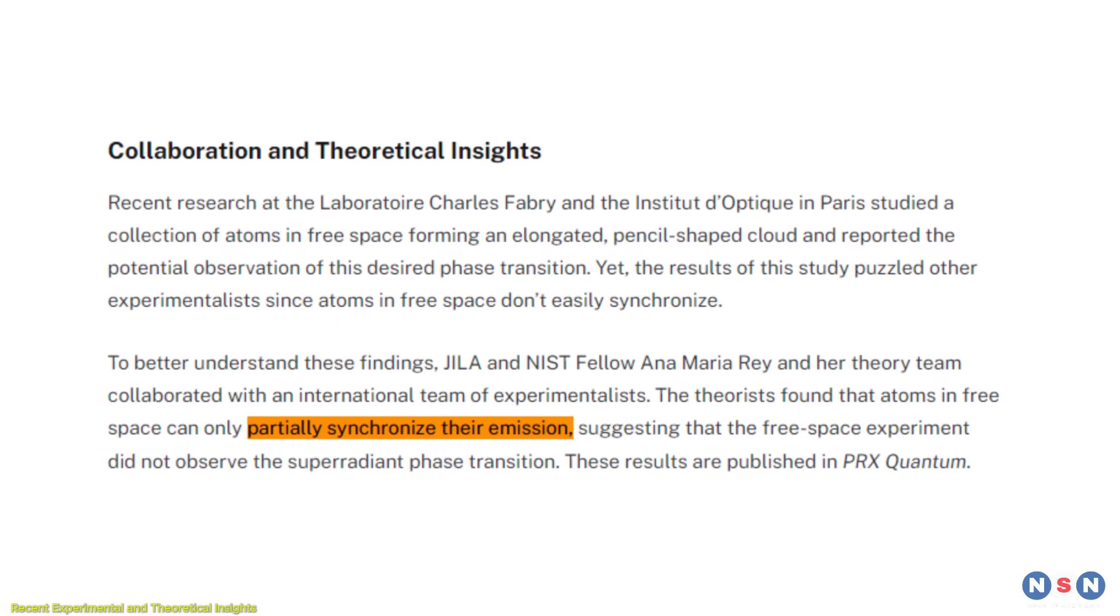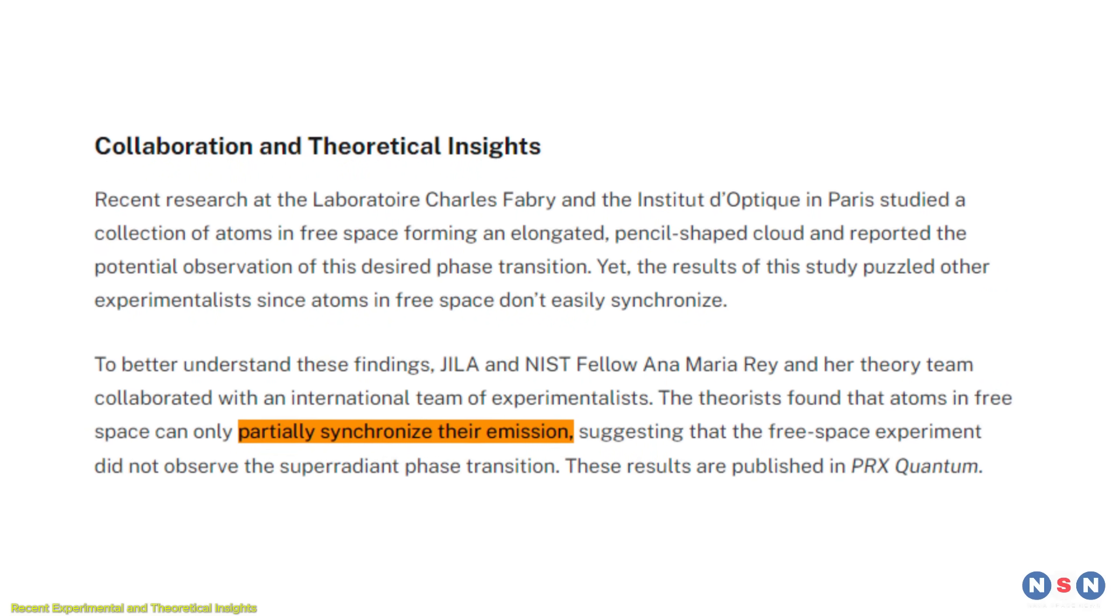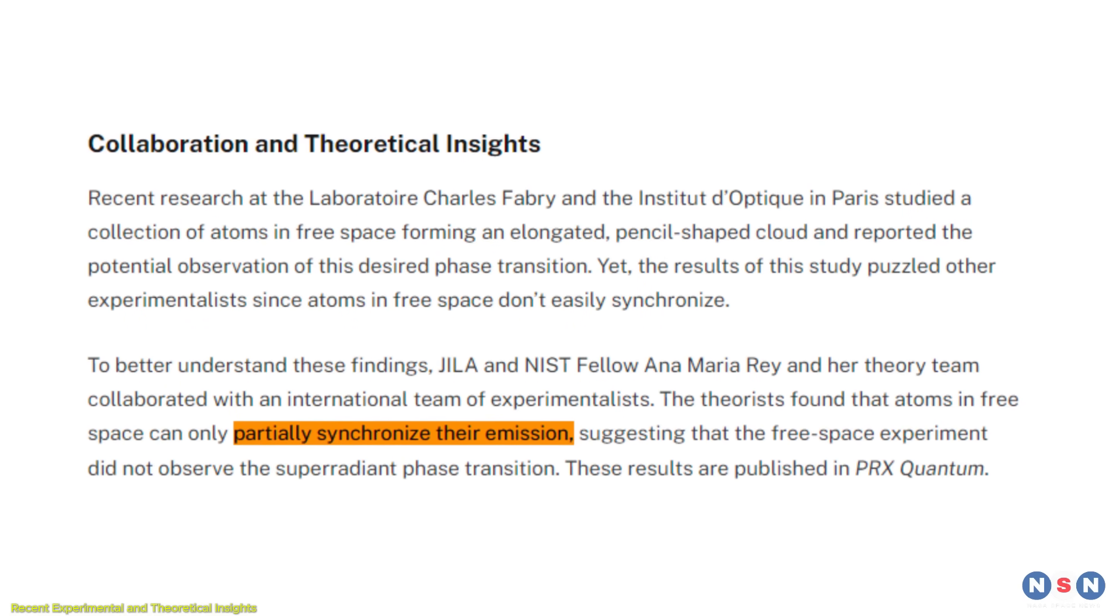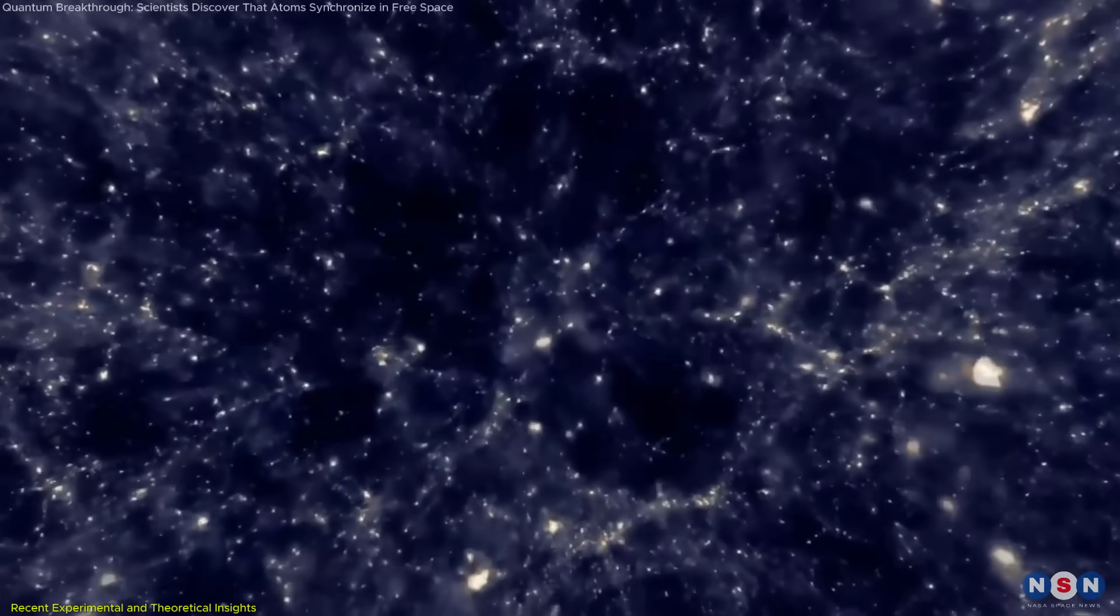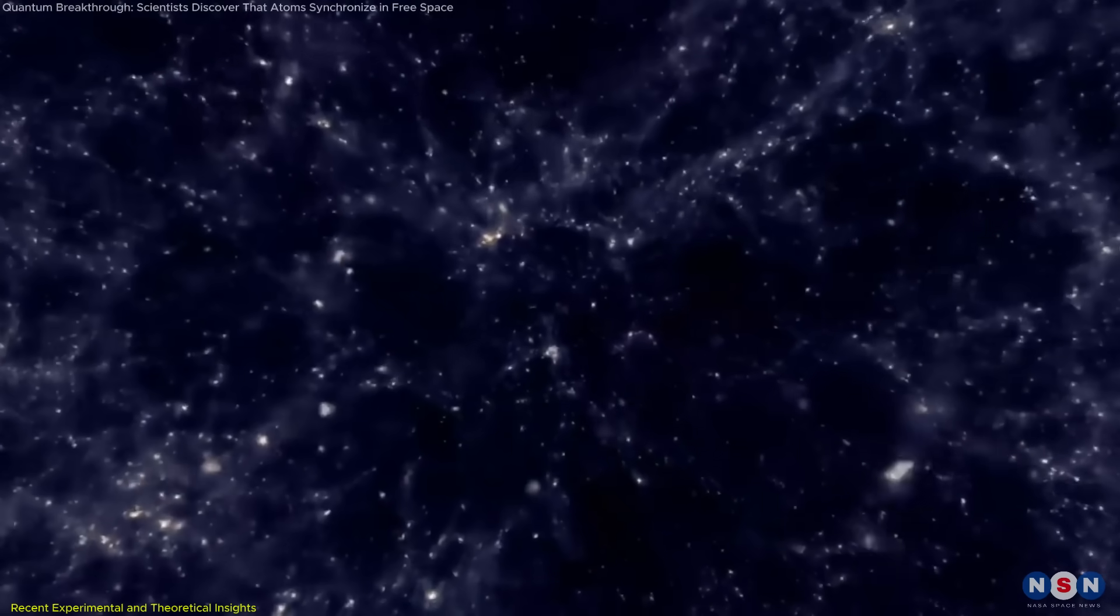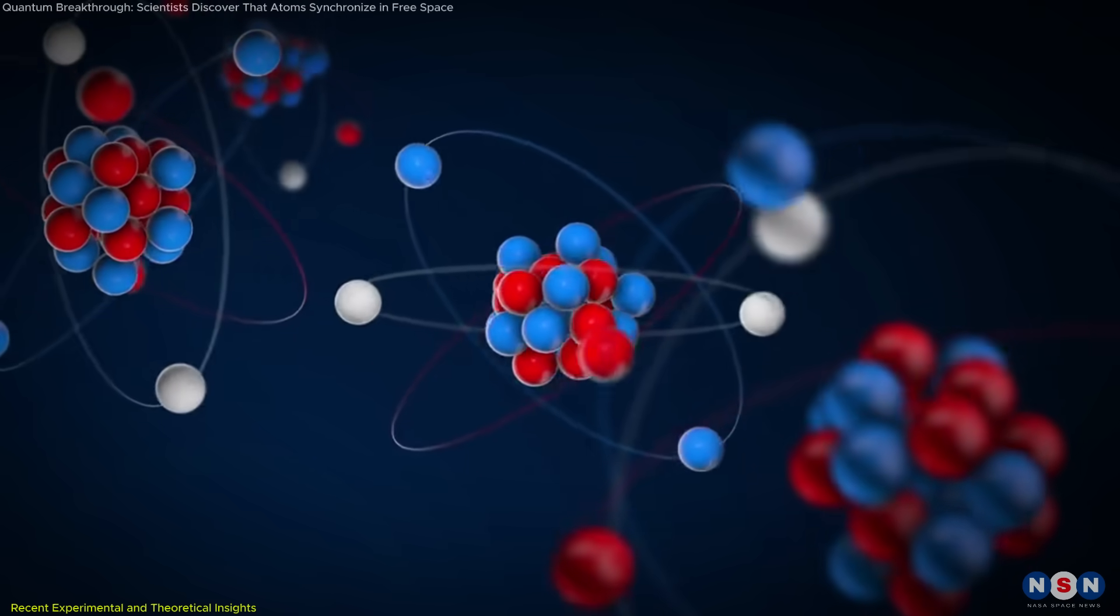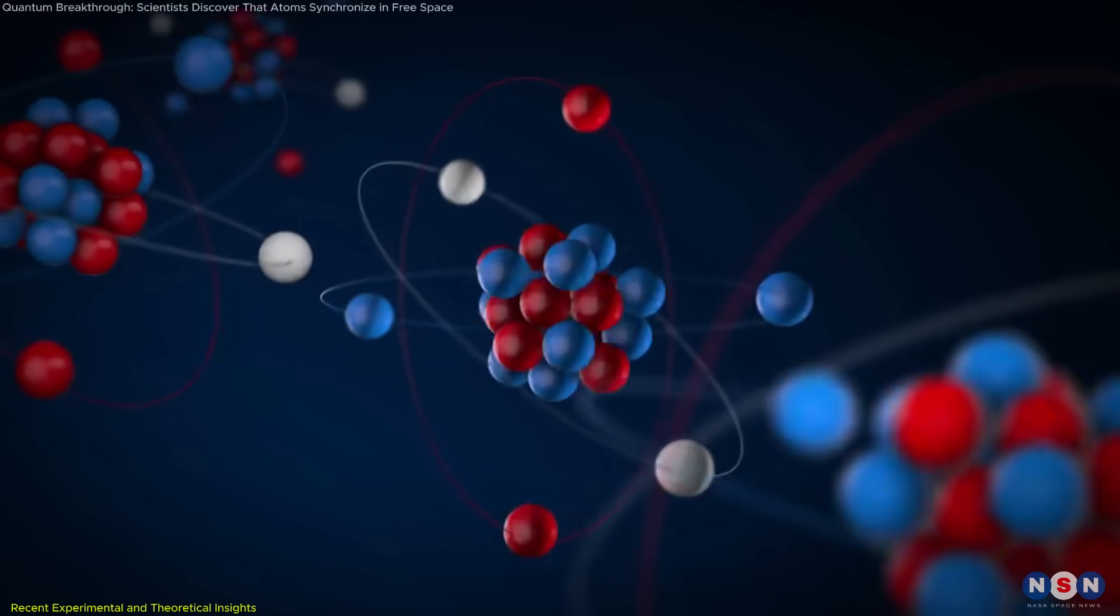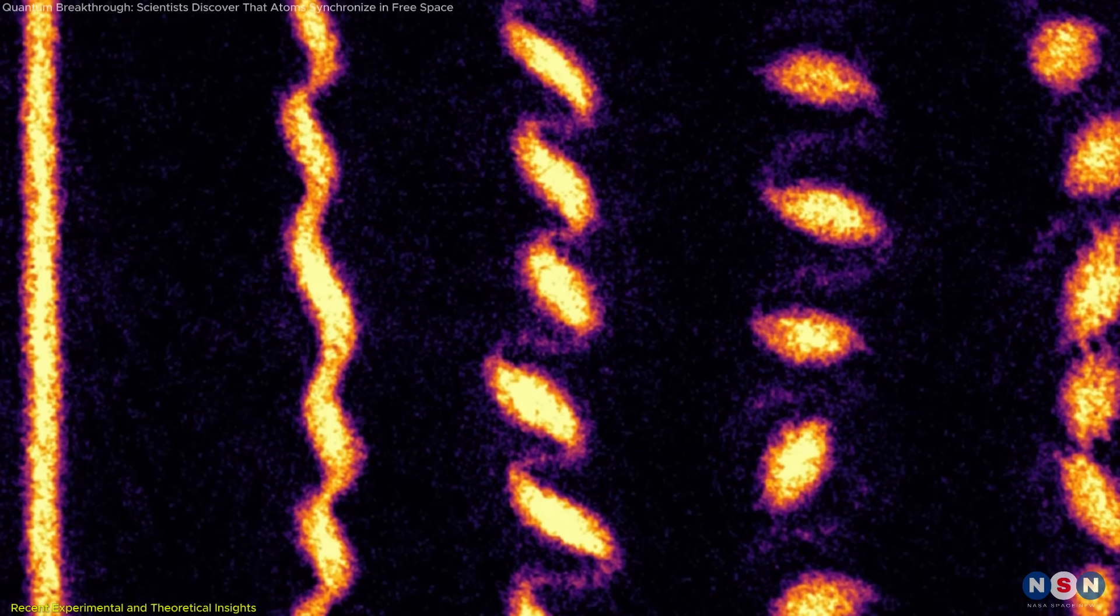The initial results were intriguing. Researchers observed signs of partial synchronization where some atoms aligned their emissions. This raised the possibility of superradiance occurring in free space, challenging decades of assumptions. However, the data sparked debate. Was this truly superradiance or merely a coincidental alignment under specific conditions?